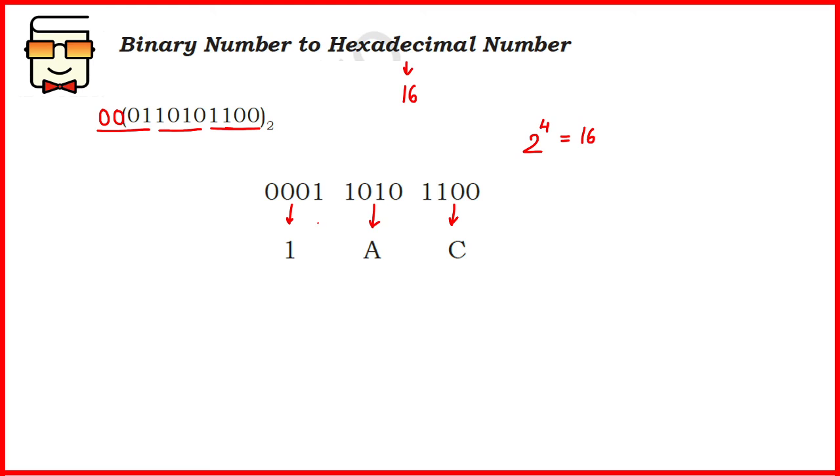In the previous case we were creating groups of threes and writing the octal representation. Here we'll be grouping in fours and writing the hexadecimal number. Please be careful that for 10 to 15 you'll have characters capital A to capital F in hexadecimal.